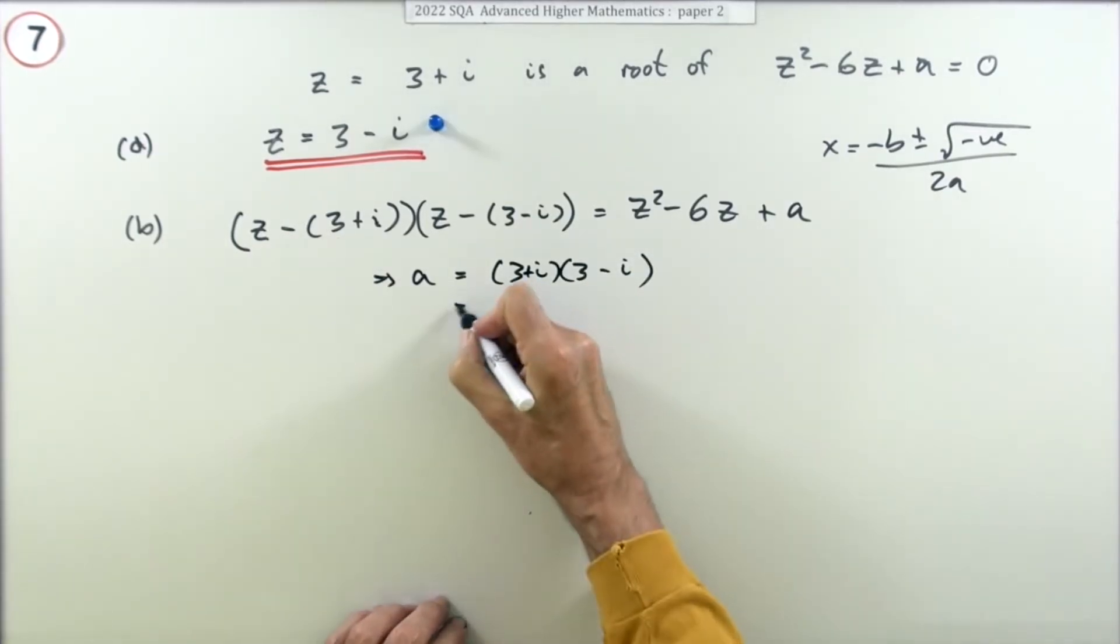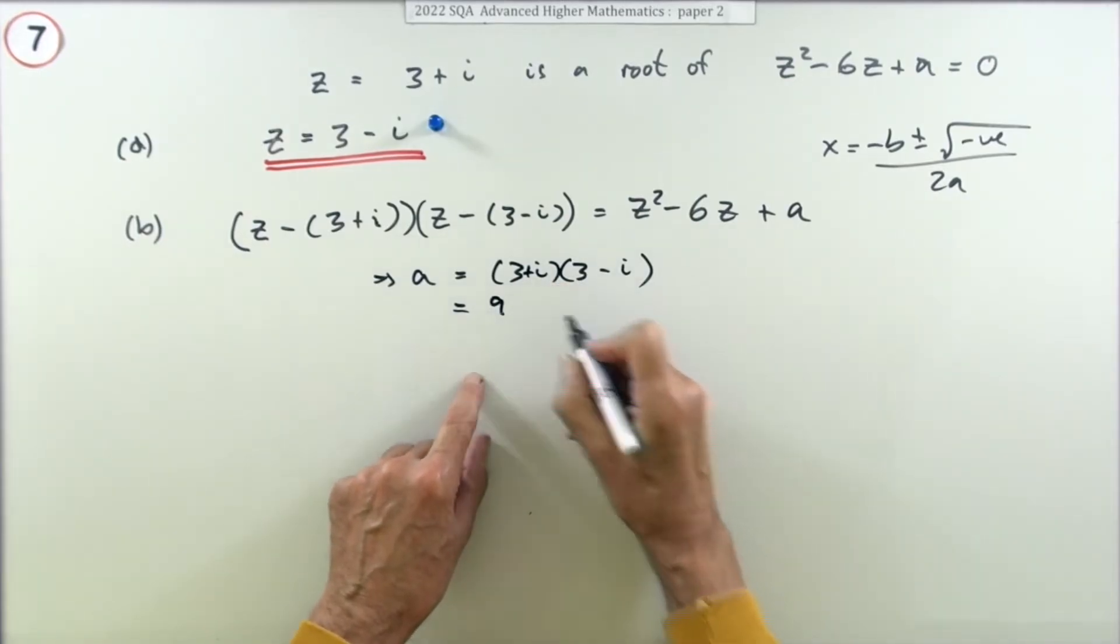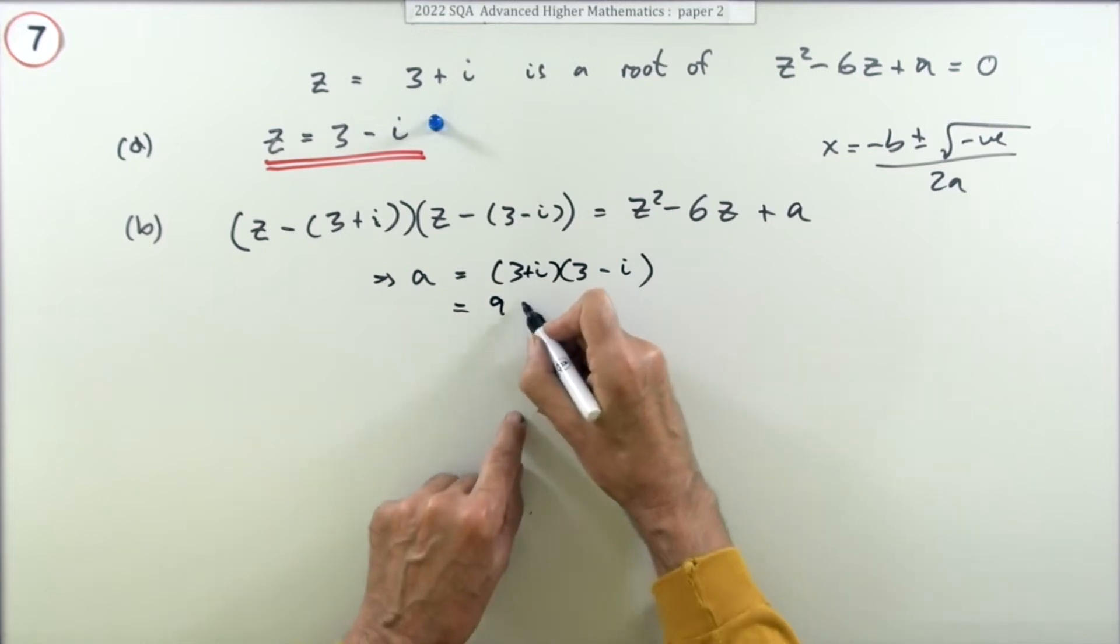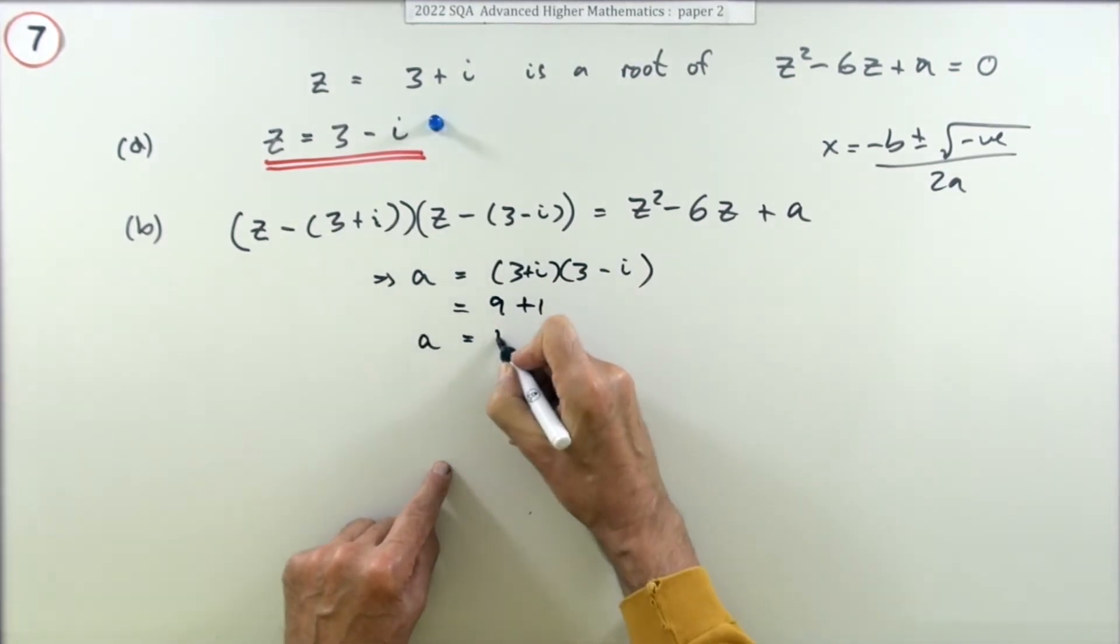Multiplying them gives you, well it's three threes or nine, the i part because it's an i squared would be plus one, and of course the middle parts cancel out because they're the same. So a is 10.